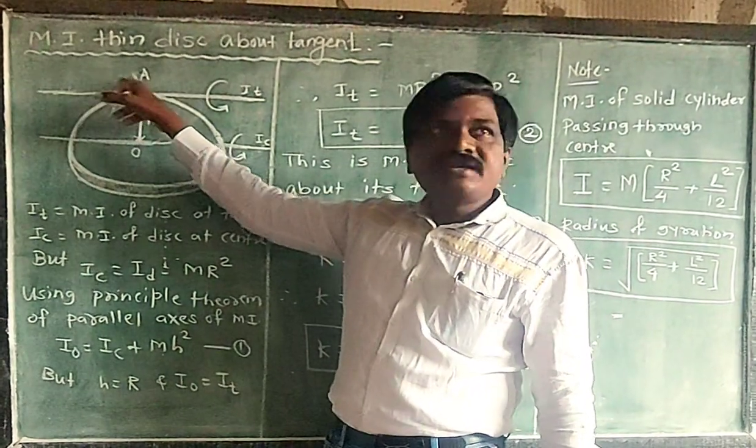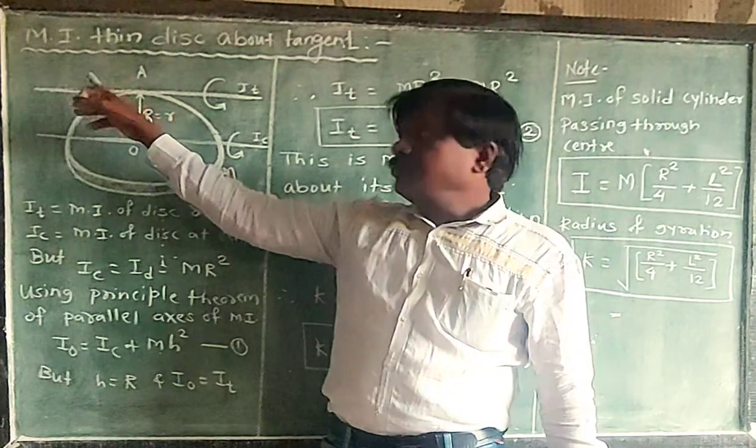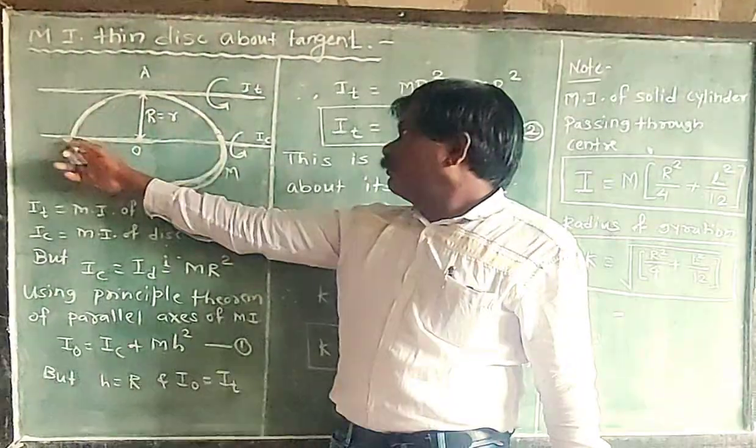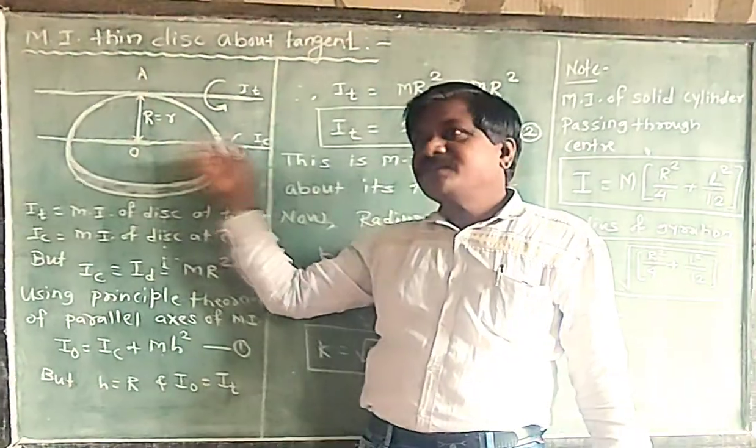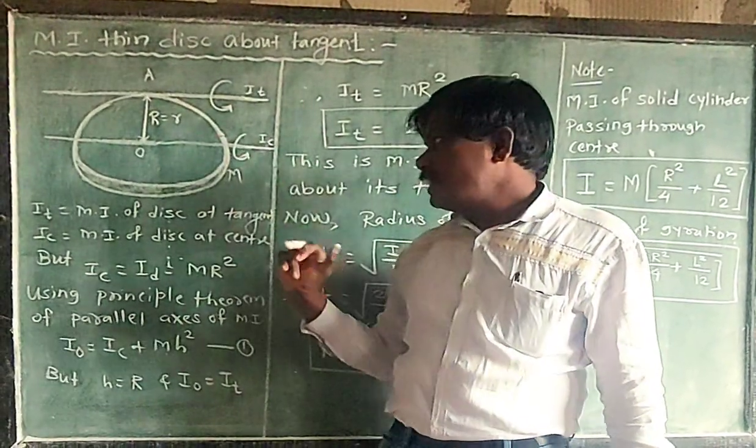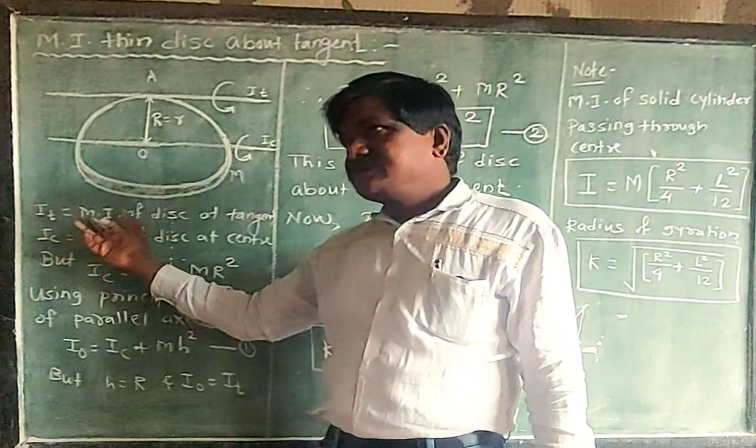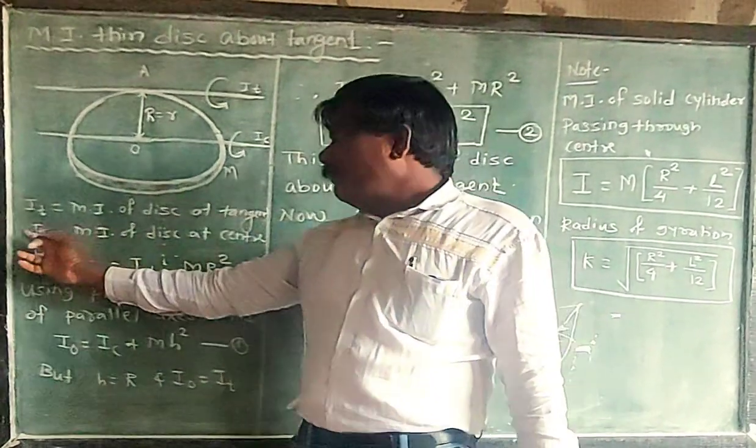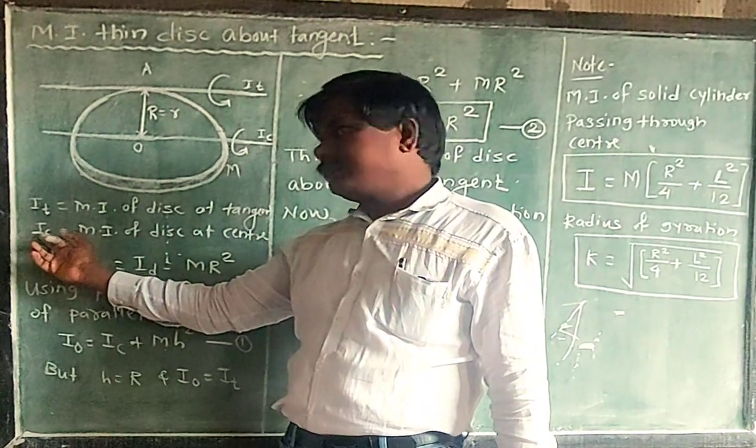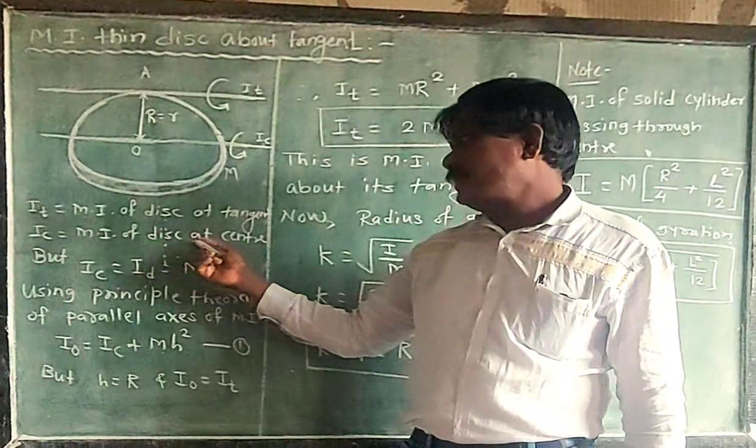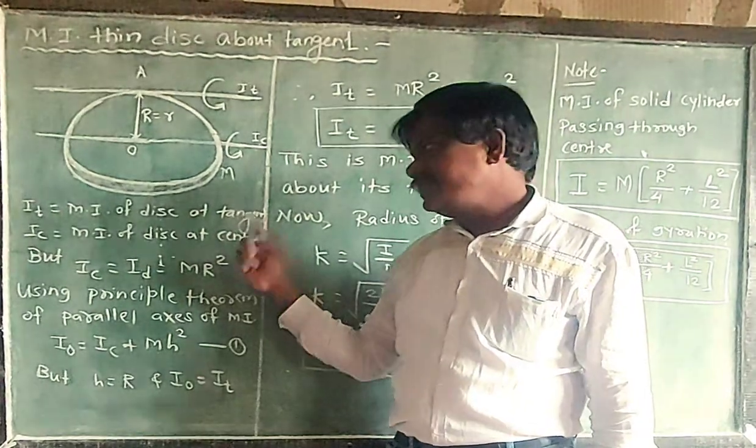Now, A is any point. This is the tangent. And moment of inertia about an axis passing through center or about its diameter. Now, I_T is called as moment of inertia of a disc at its tangent. Moment of inertia I_C passing through center. So I_C is moment of inertia of a disc about its center.